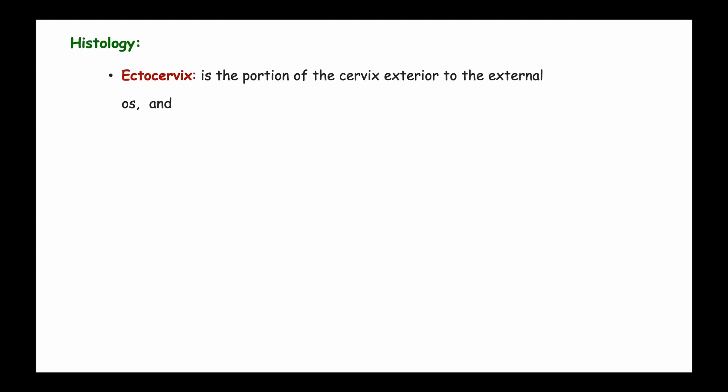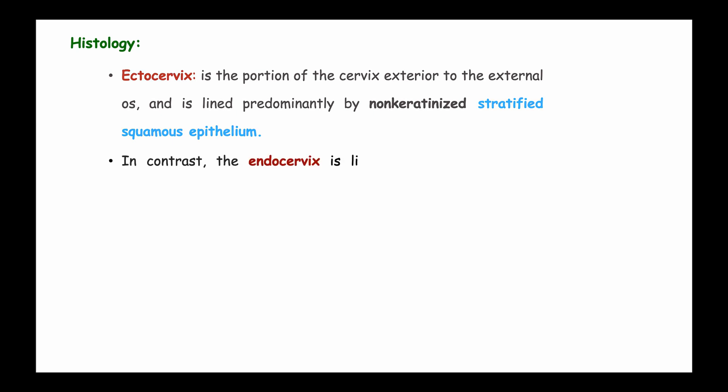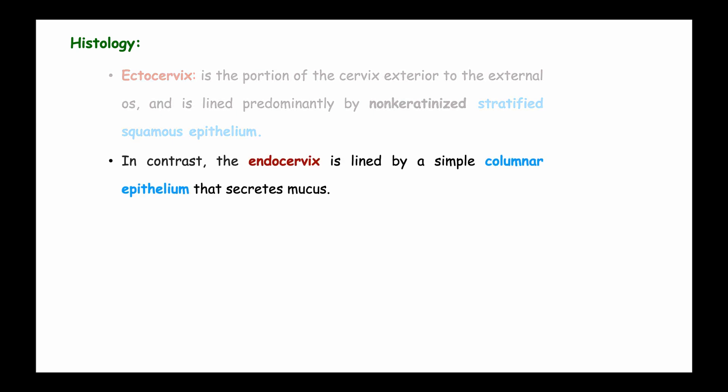On histology we find the ectocervix, which is the portion of the cervix that lies exterior to the external os and is lined predominantly by non-keratinized stratified squamous epithelium. In contrast, the endocervix is lined by a simple columnar epithelium that also secretes mucus.